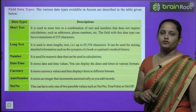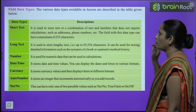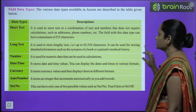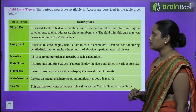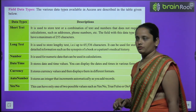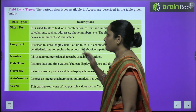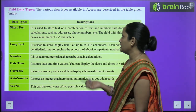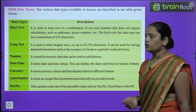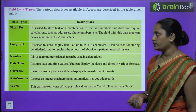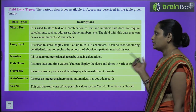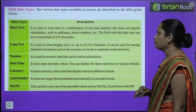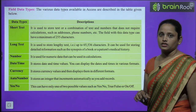Next is field data type. The various types of data available in Access are described in the table below. The first data type is Short Text. It is used to store text or a combination of text and numbers that do not require calculation — such as address, phone number, etc.